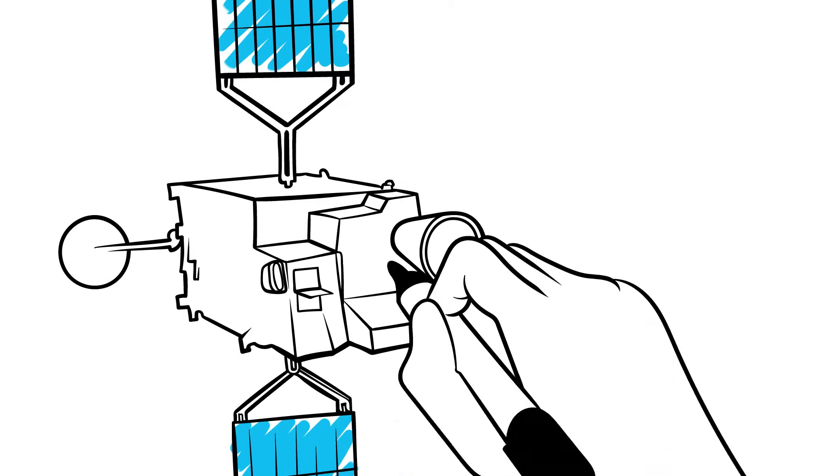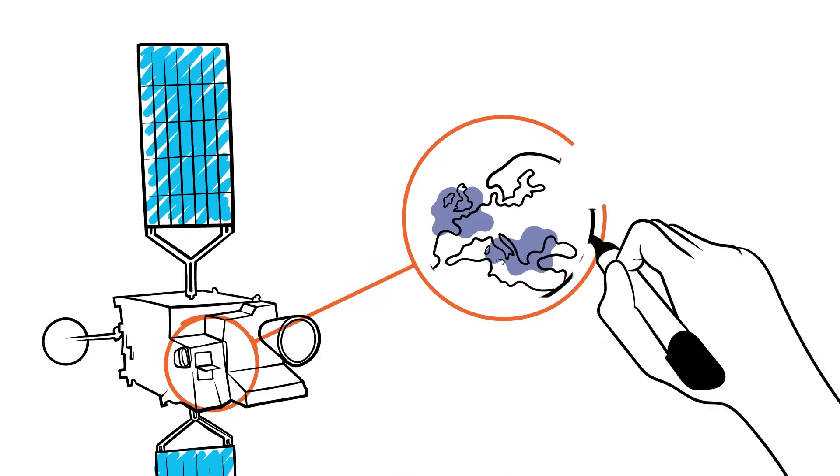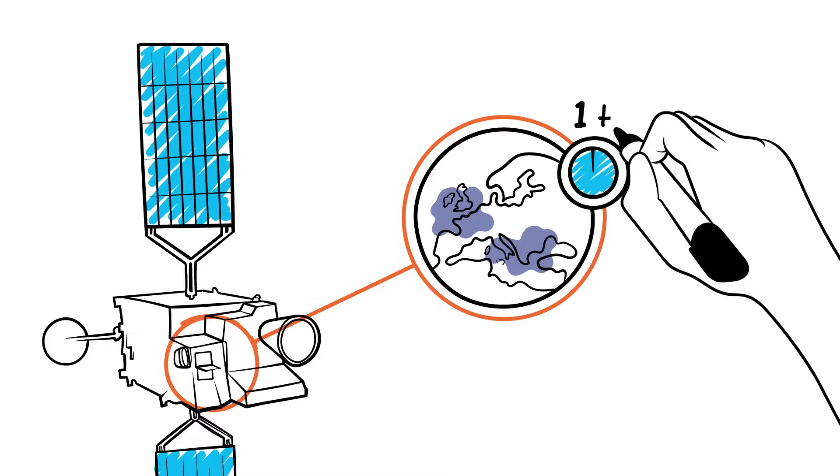This satellite will also carry the European Union's Copernicus Sentinel-4 instrument, which will measure air pollution over Europe every hour.